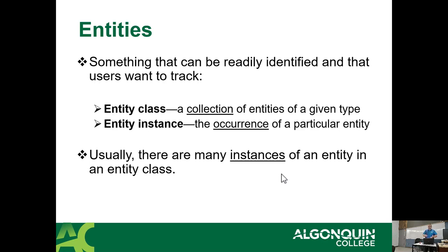An entity class is a collection of entities of a given type. An entity instance is the occurrence of a particular entity. The phrase entity and entity class are interchangeable — entity instance is not. So an entity class is just called an entity; we're using fewer words for the exact same thing.